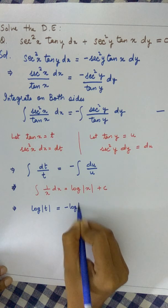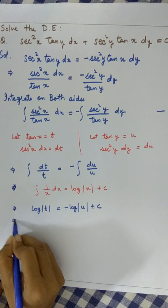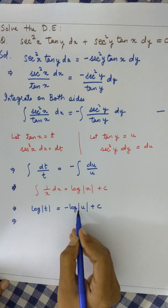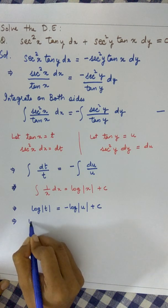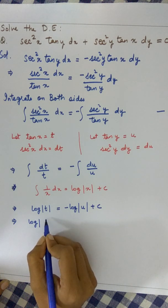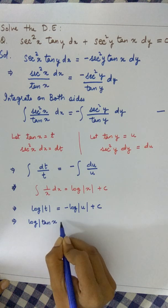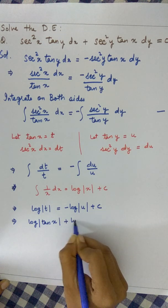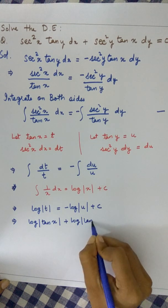Let's substitute the values and bring log u to the left side so it becomes positive. We can write log of tan x plus log of tan y equals c.